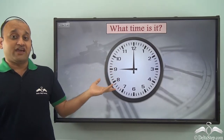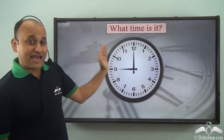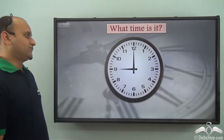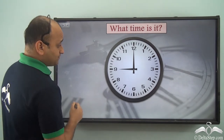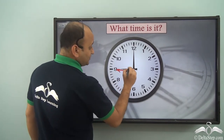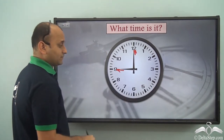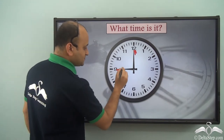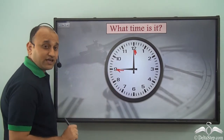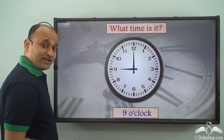This is a clock which you see every day at different places. Now if I ask you what time is it, can you tell me? We see two things: the smaller hand is pointing to nine, and the larger or longer hand is pointing to twelve. So what time is it? The smaller hand is pointing to nine, so it is nine o'clock.